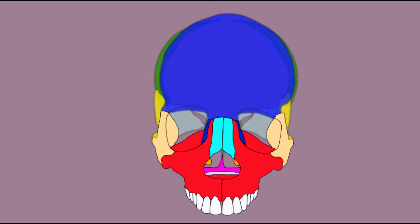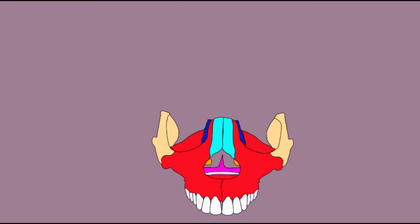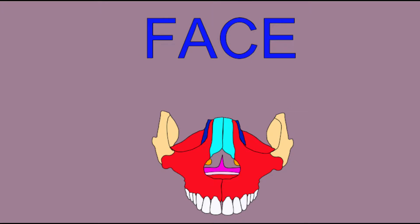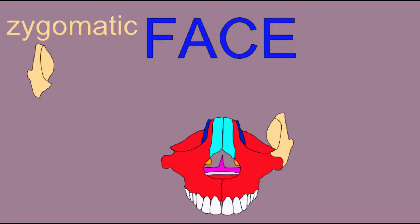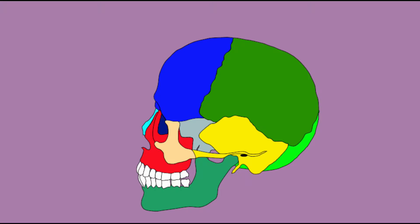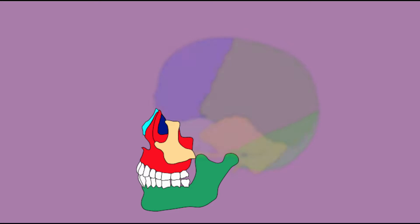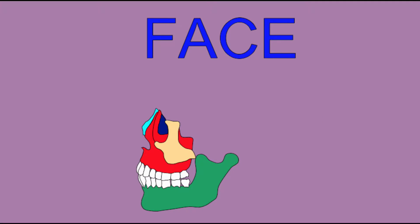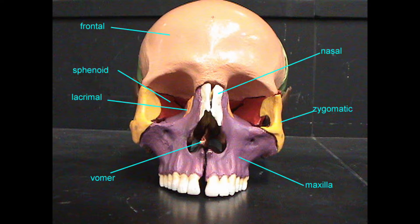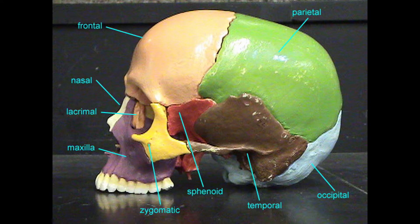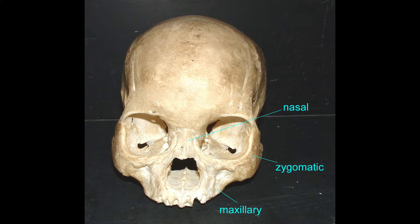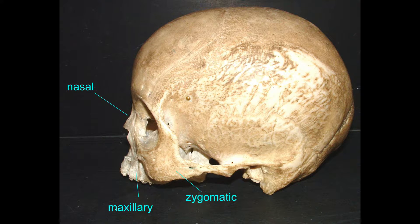The zygomatic bone, also known as the cheekbone, is a bone of the face. It forms part of the inferior and lateral borders of the orbit, and it is very close to the skin. There is little adipose or other connective tissue covering it, so it is very easy to palpate.